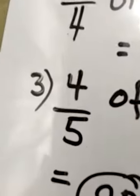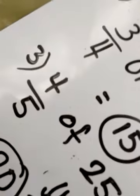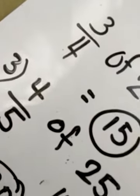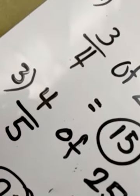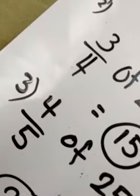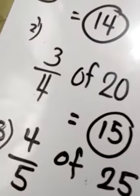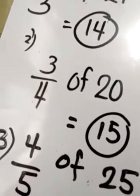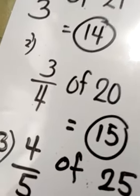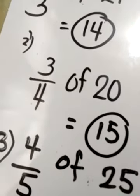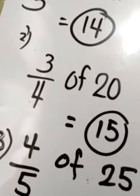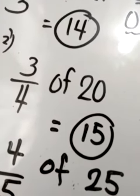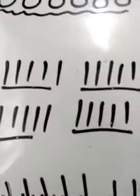We go to number 3, four-fifths of 25. Our number to be divided is 25, so we are going to look for the factors of 25. We have 5 and 5, dalawang 5. Ibig sabihin we are going to group 25 into 5 groups at ang bawat group consist of 5 din.